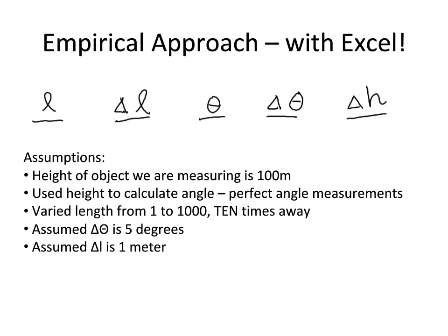So, just for example, I'm going to assume that the height of an object we're measuring is 100 meters. So we're measuring a 100 meter tall tree. And then, working backwards from that 100 meters, I'm going to use that to calculate the angle. And given the length, which I'm going to vary from 1 to 1000, which is up to 10 times away from the tree. So this will give me a good range of angles. And then, for the sake of calculation, I assumed for this case that the error in theta is always 5 degrees, which is an absolute error.